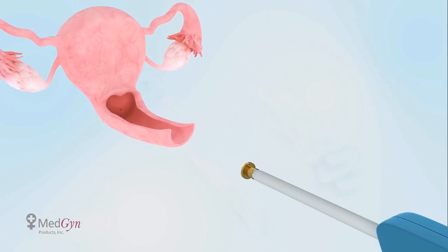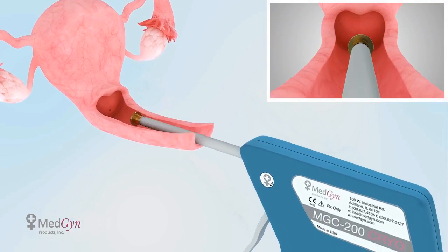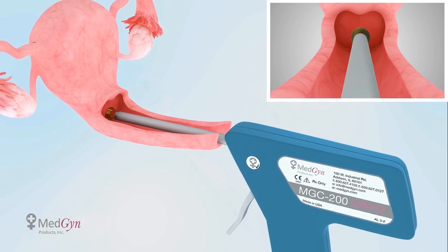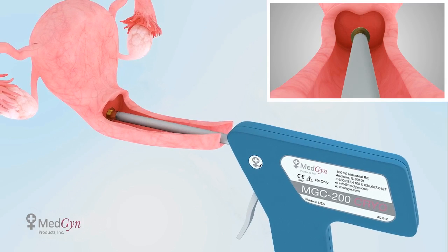Place the probe stem on the designated area. Squeeze the trigger gently until it latches into the first click position. This is the freeze mode. There is no need to maintain pressure on the trigger. Keep this position until the tissue is frozen.